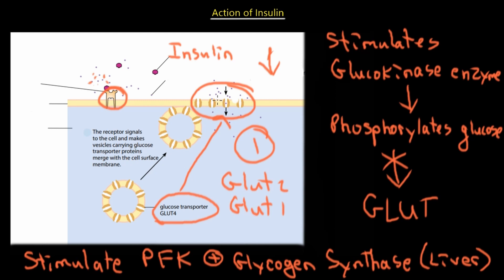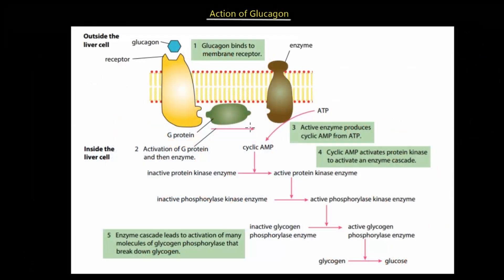To summarize insulin's three effects: first, GLUT transporters are inserted into the cell surface to take up glucose from the blood; second, glucokinase is stimulated to phosphorylate glucose, preventing it from leaving the cell; and third, phosphofructokinase and glycogen synthase are stimulated in the liver to build glycogen by adding glucose molecules onto it.